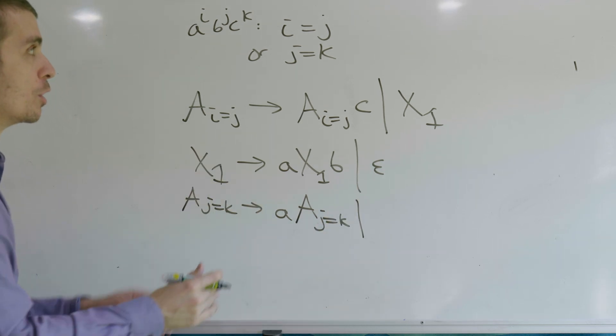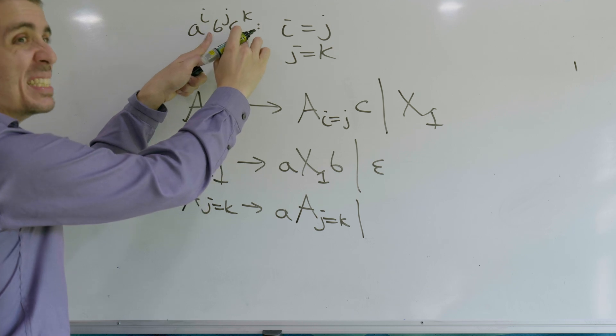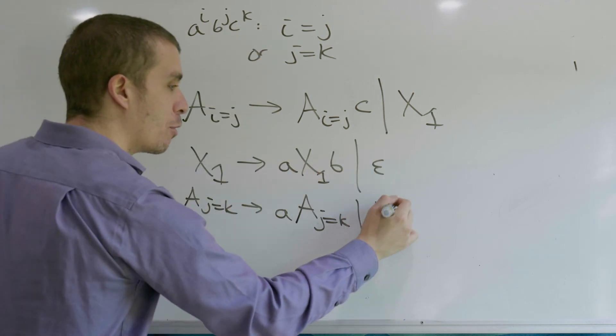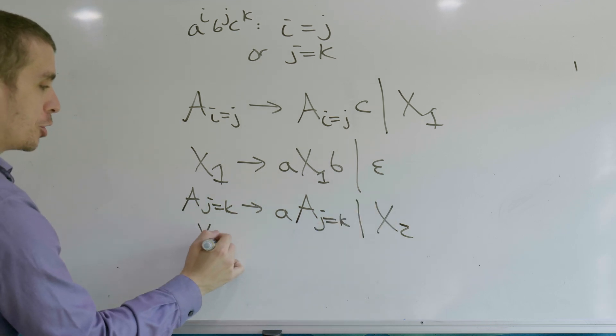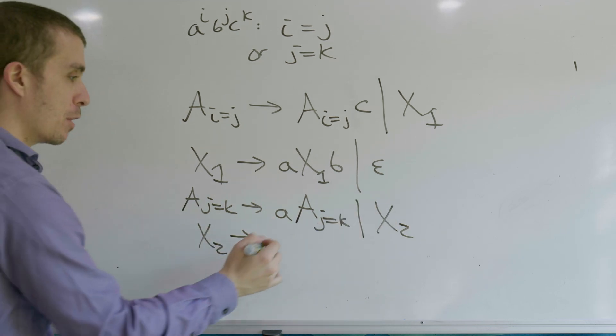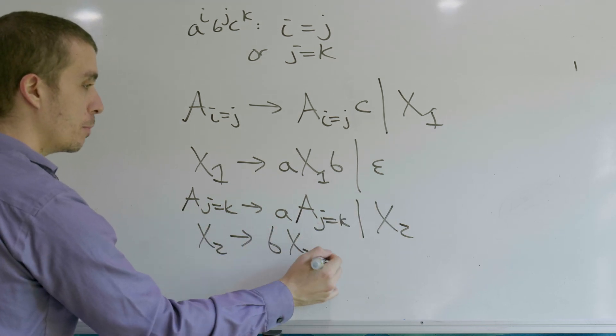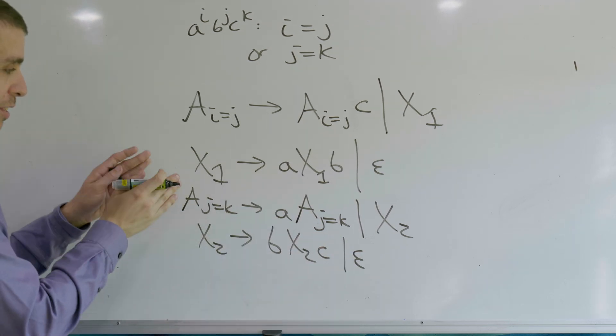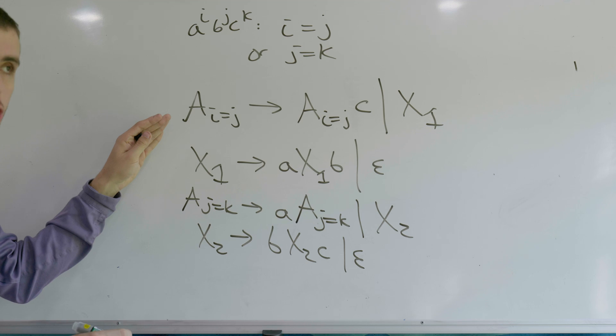we need to switch to a different variable, which makes an equal number of B's and C's. We can't use this one because that involves A's and B's. So I got to use another variable, X2, which is going to spout those off. And that's pretty easy to do because it's just like this one. All right. So that handles j equals k. We have i equals j done.